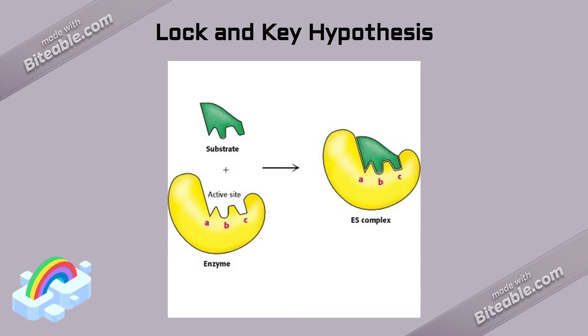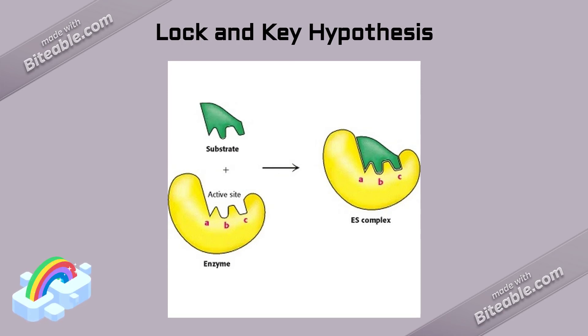The substrate fits into the active site of the enzyme, and when they have successfully bonded or combined — with the help of hydrogen or other types of covalent bonds — the substrate is catalyzed, resulting in the formation of the enzyme-substrate complex. When the substrate is successfully broken down or catalyzed, the products are released and the enzyme is chemically unchanged and ready to catalyze another reaction.